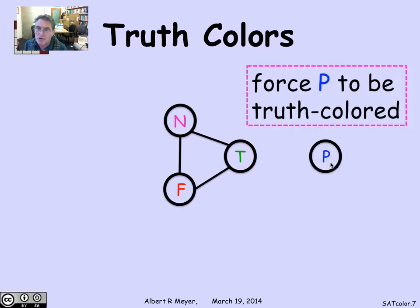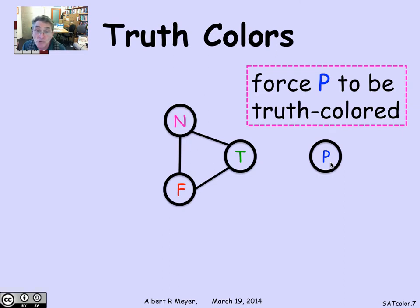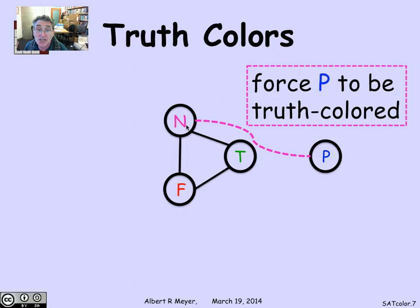Now suppose I have an arbitrary vertex being used to simulate the input or output of a gate, and I want to force this vertex P to only be colored with a true or false color in any coloring of the graph. That's easy: I can constrain any possible satisfactory three-coloring of the whole graph to have P be true-or-false colored simply by making P adjacent to the neutral color vertex. Because there's a connection, P has to have a color that differs from the neutral color, meaning P has to be true or false colored. Simply attaching an edge to make P adjacent to N forces P, in any proper three-coloring of the whole graph, to be assigned a truth-value color — true or false.